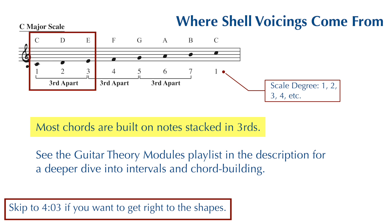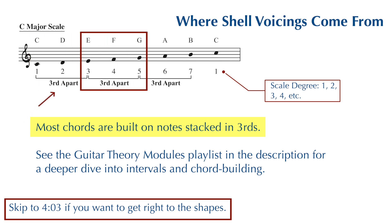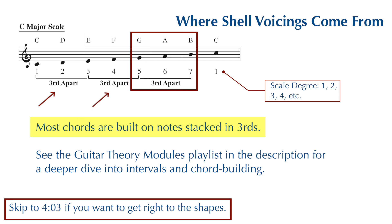From C to E, we count three notes — C, D, E — so C and E are a third apart. From E to G, we count three notes — E, F, G — so E and G are a third apart. And from G to B, you count, you guessed it, three notes — G, A, B — so G and B are a third apart.